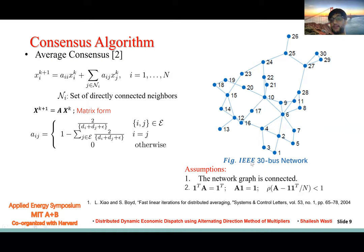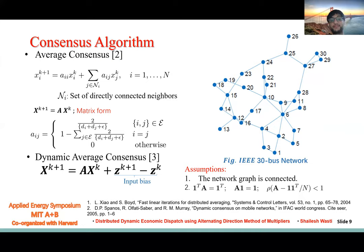Now, what if the average of the network itself is changing? Or in other words, the value of the nodes are changing with time. For that, we have dynamic average consensus that tracks the change with time.